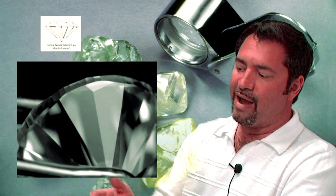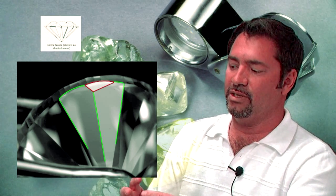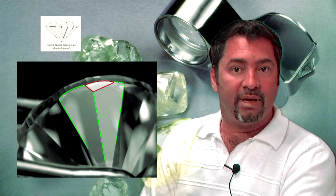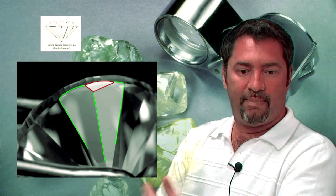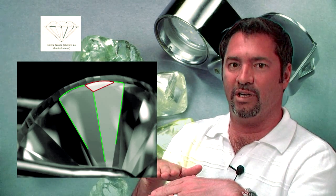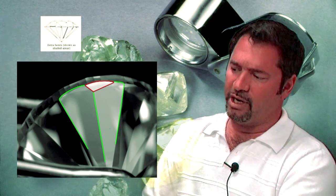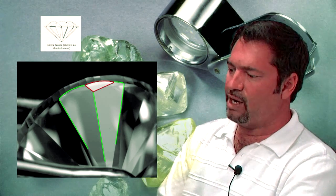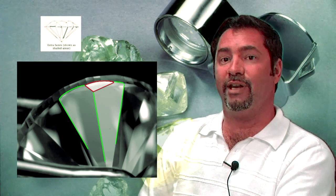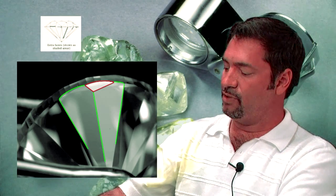Sometimes when a factory is cutting a diamond, they may polish an extra facet. An extra facet may be added if there was an imperfection on the stone and they wanted to polish it off. An extra facet isn't a major problem. Diamonds with excellent symmetry can have an extra facet if it's generally confined to the girdle of the stone.